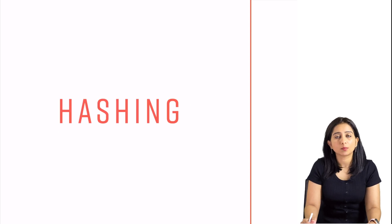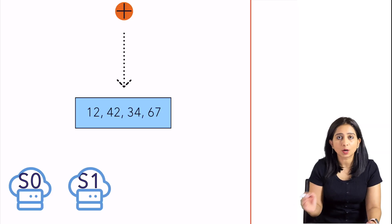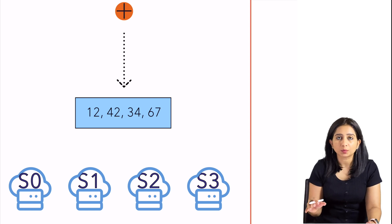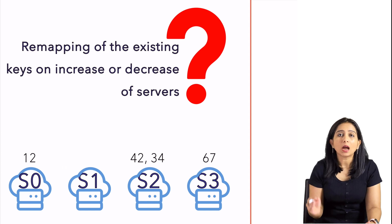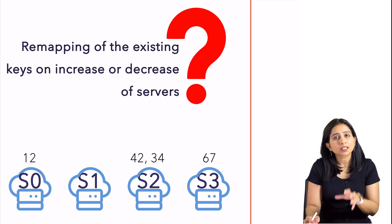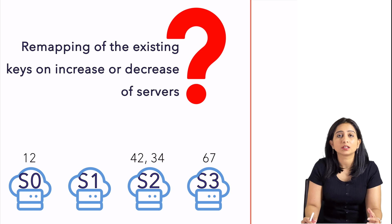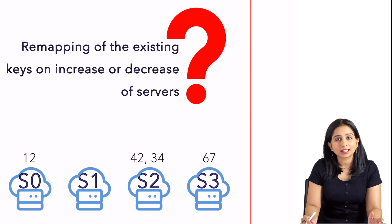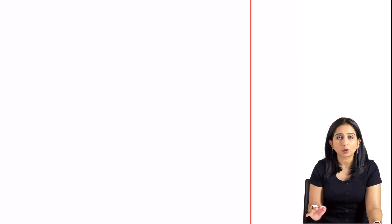In the previous video, when we were studying about hashing, we calculate hashes for all the values that we want to save. There is an output range of numbers for which those hashes are generated, and then we map those numbers to different servers and save the values in different servers. We found that the problem occurs whenever we want to add a server or remove a server — we have to remap the existing keys. Consistent hashing solves that problem.